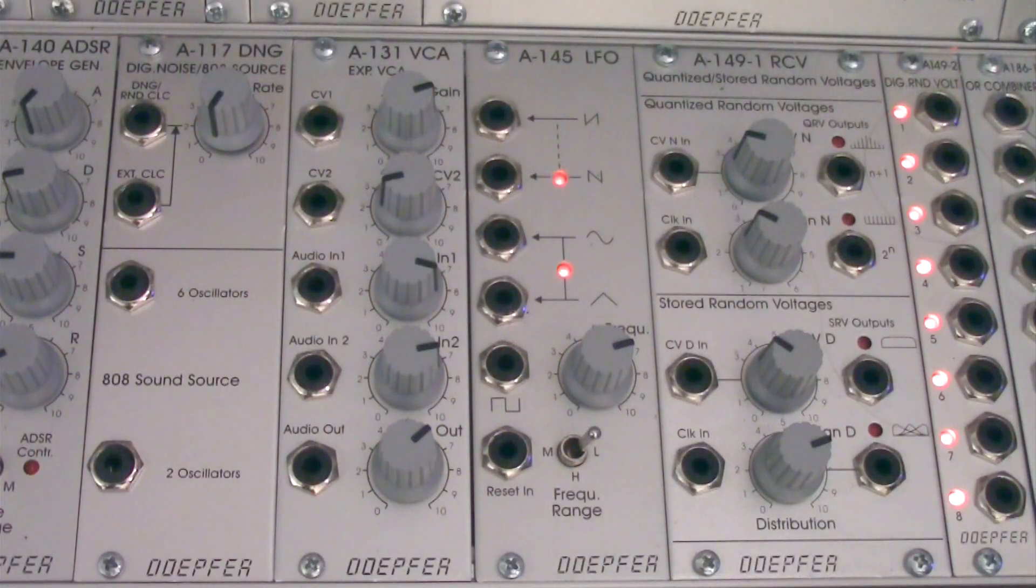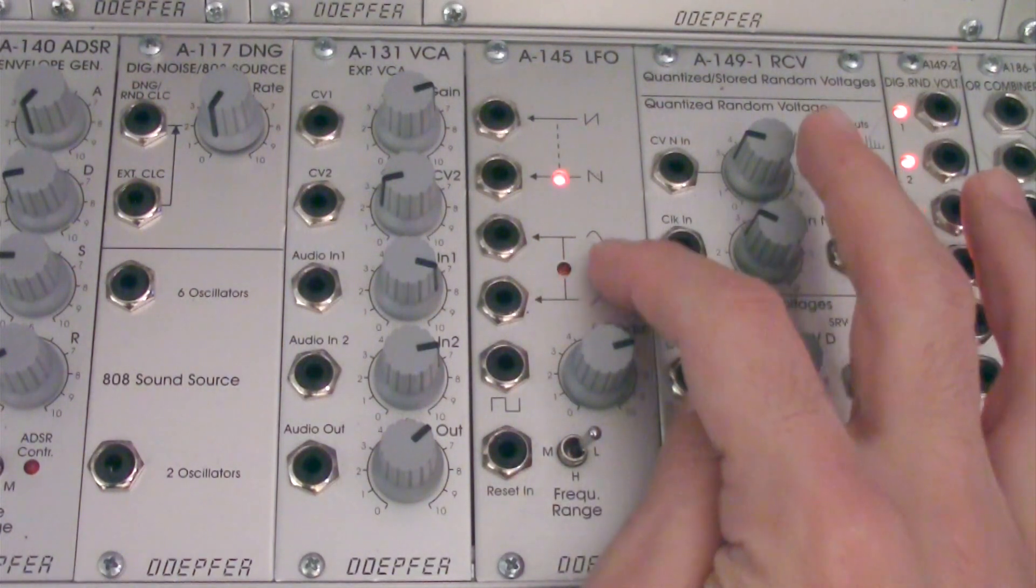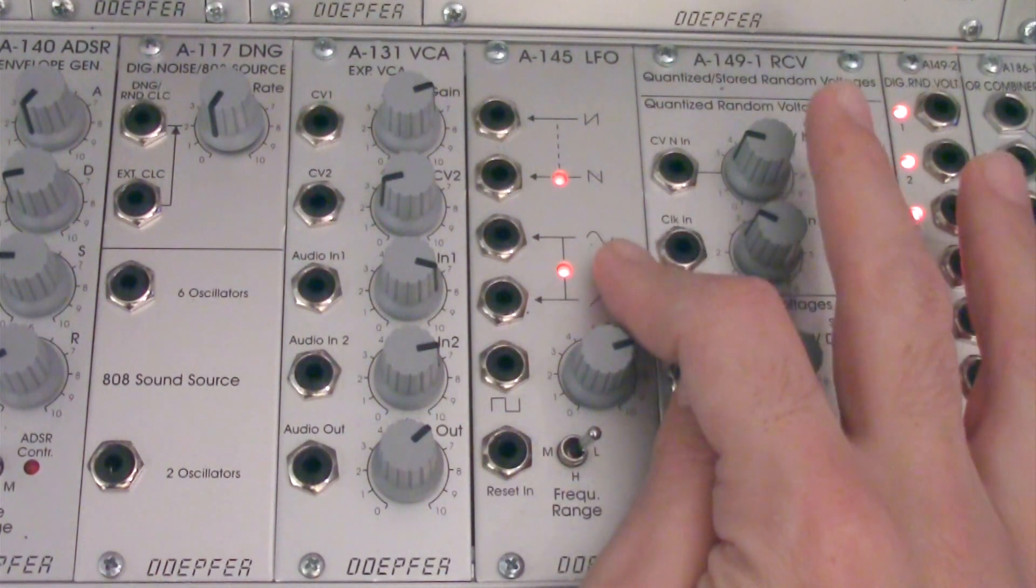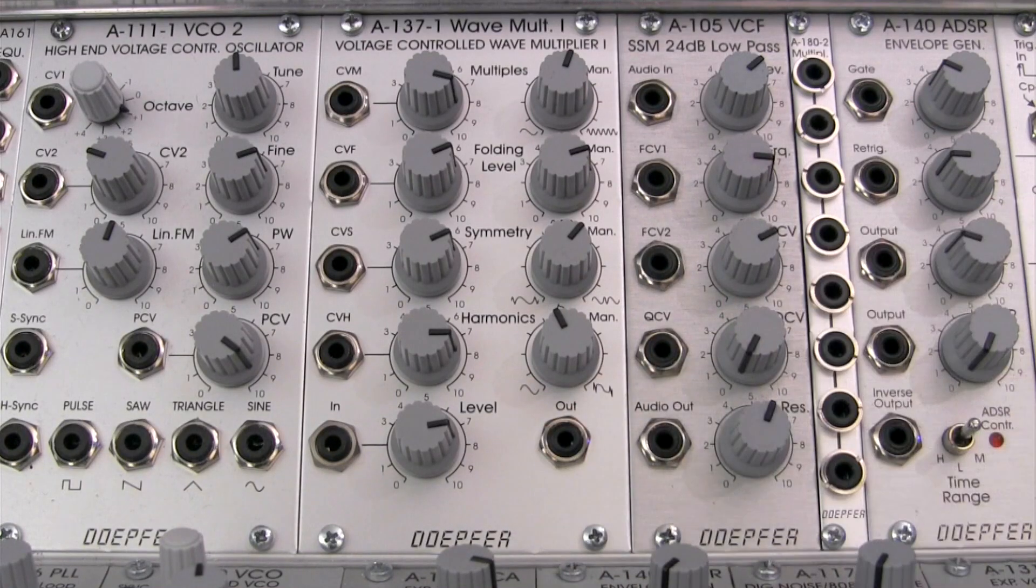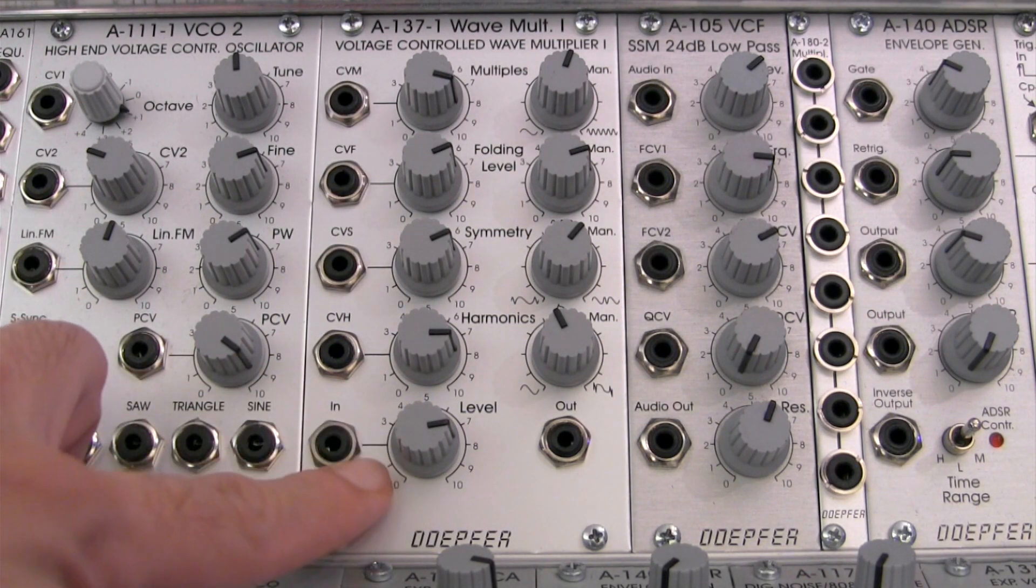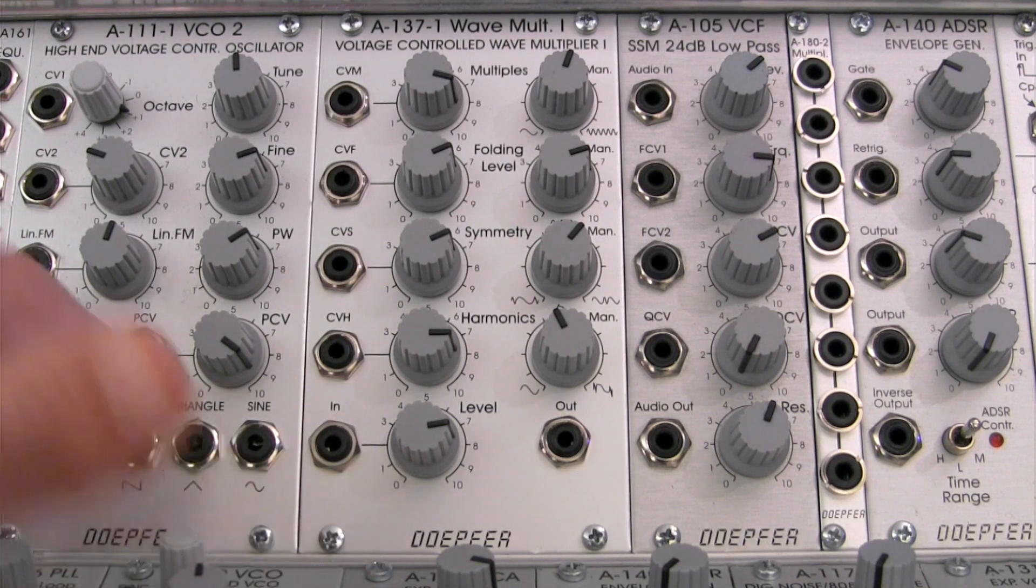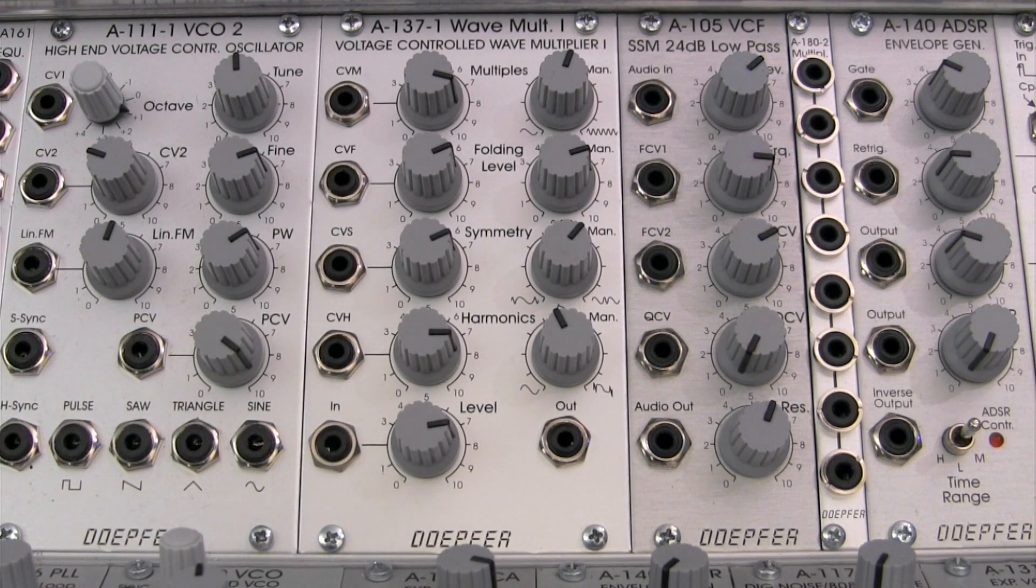We're going to be taking a sine wave from our A145 over here, and we're going to be processing that into our A137. If you were with us in the basics video, you heard about what types of waveforms are best processed in here. It prefers sine and triangle waves to achieve the best effects or benefits from it. So that's what we're going to be using this time around.